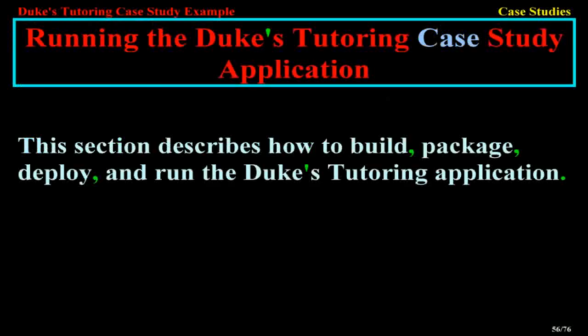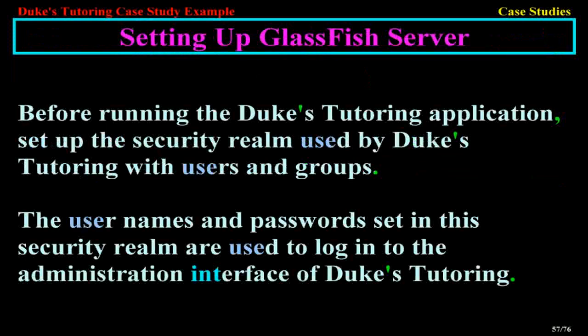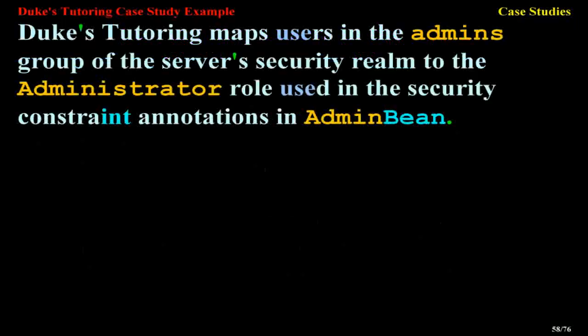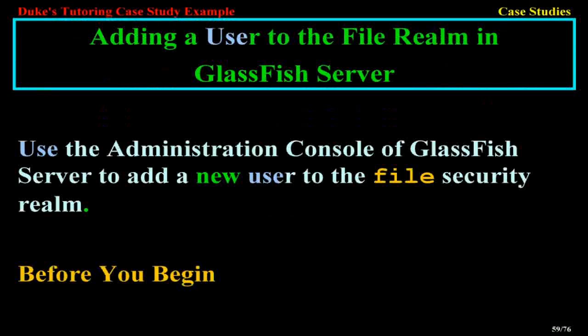This section describes how to build, package, deploy, and run the Duke's Tutoring application. Before running the application, set up the Security Realm used by Duke's Tutoring with users and groups. The usernames and passwords set on the Security Realm are used to log in to the administration interface. Duke's Tutoring maps users in the Admins group of the server's Security Realm to the Administrator role used in the security constraint annotations in AdminBean.